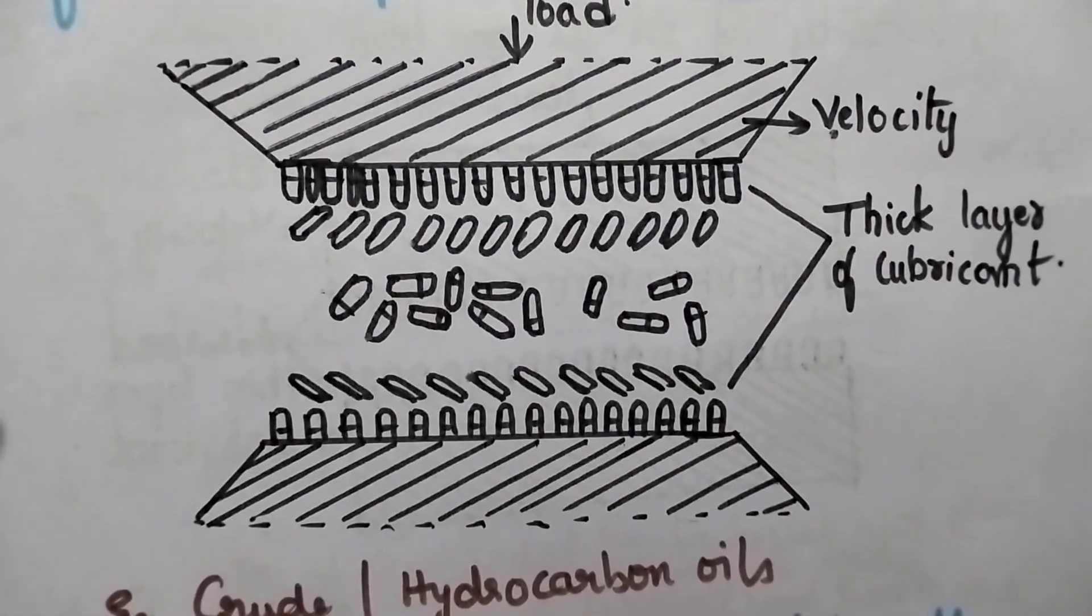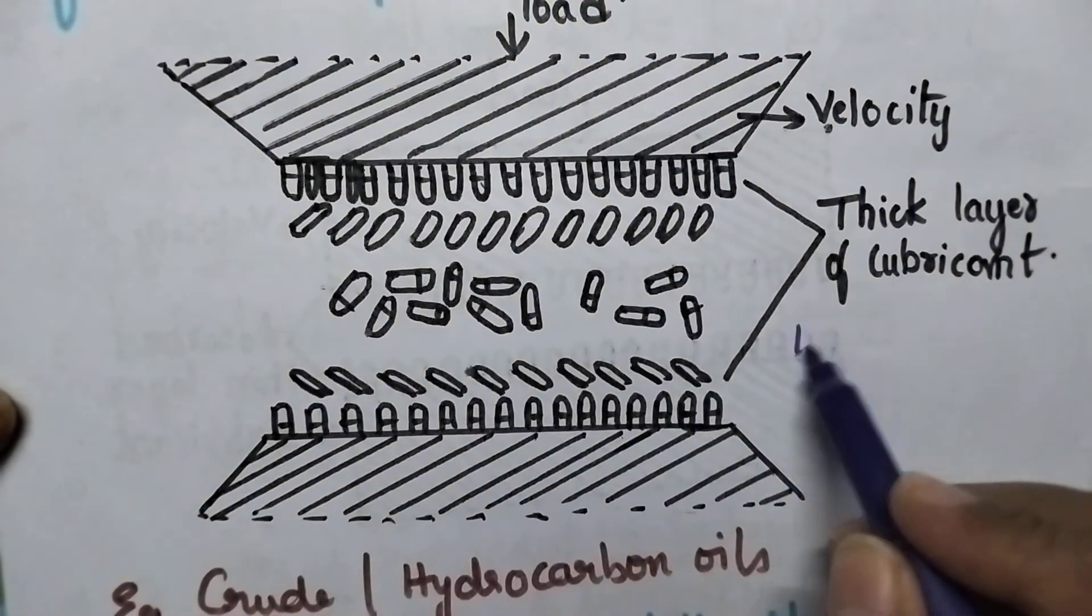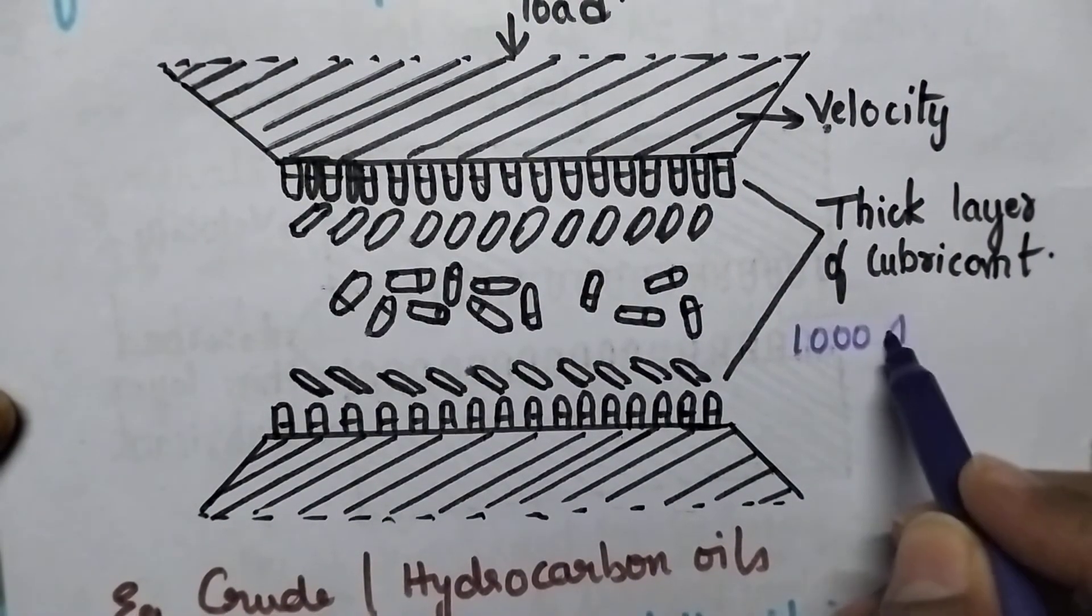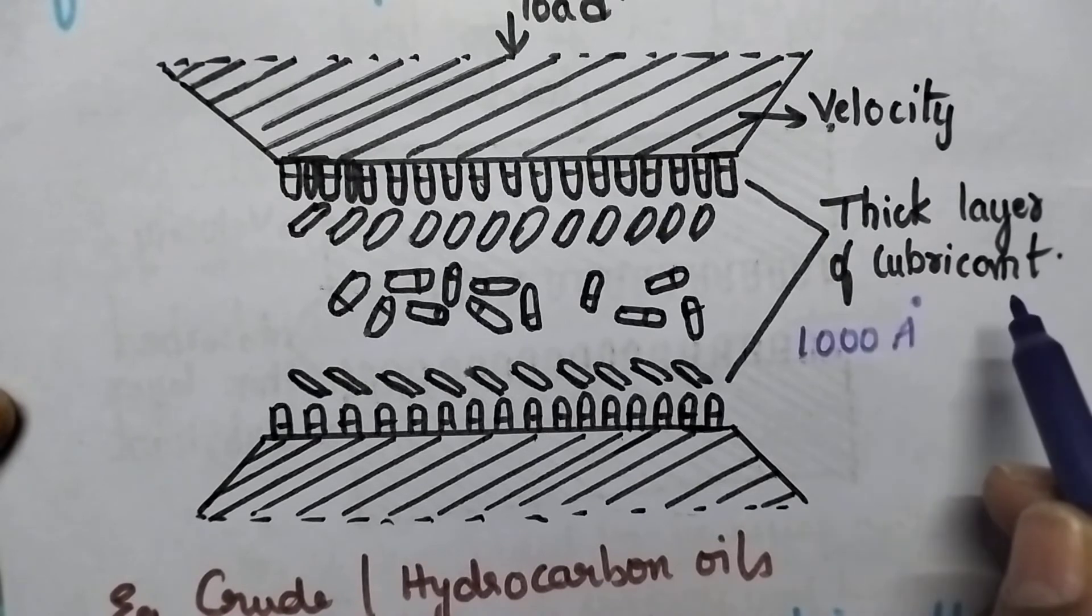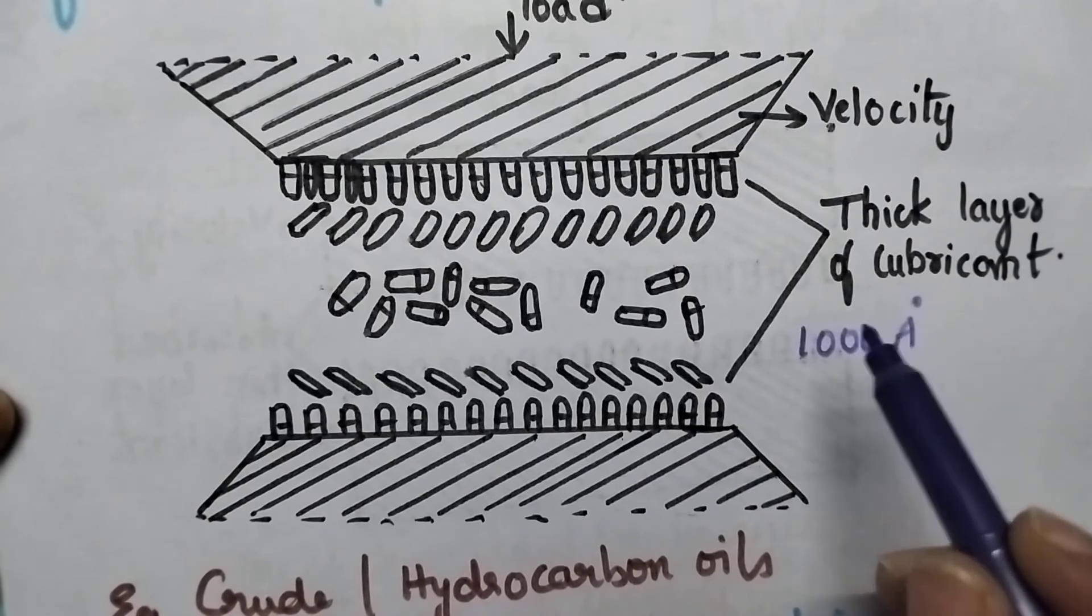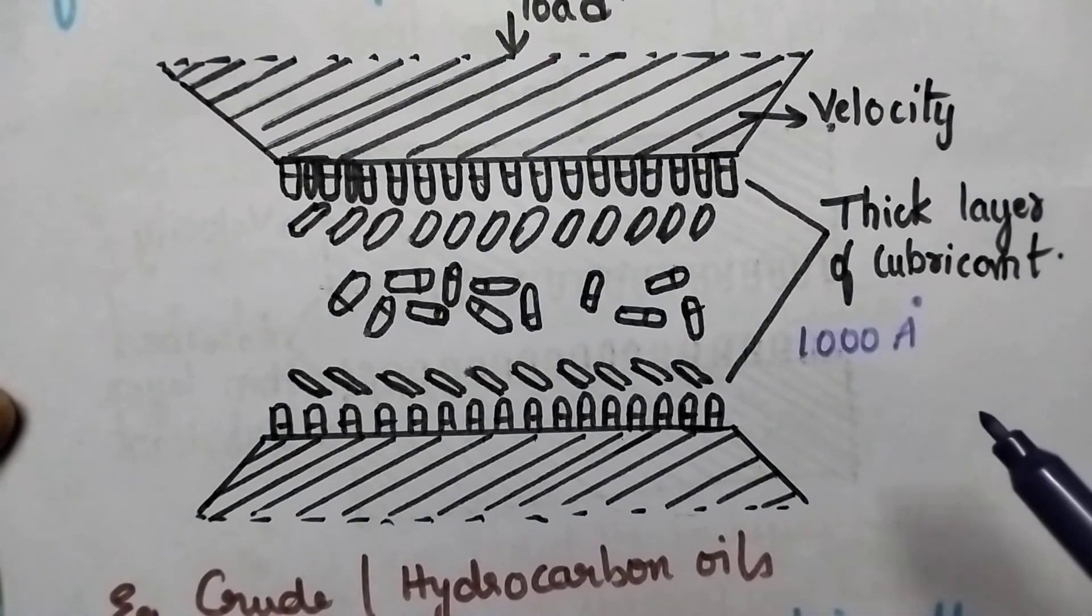So especially if the thickness of the lubricating oil is around 1000 angstrom units, it is called as thick layer lubricant. It is highly useful to prevent wear and tear and at the same time to reduce the friction.